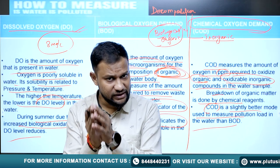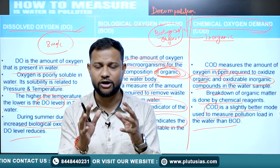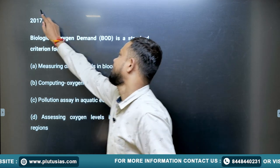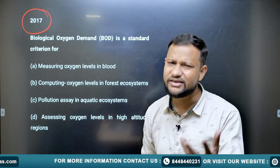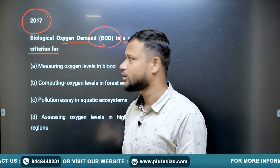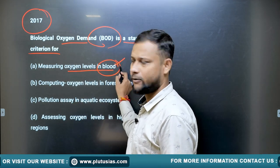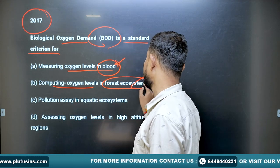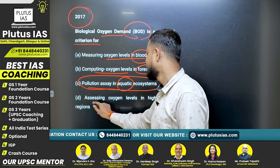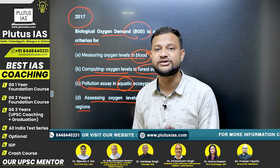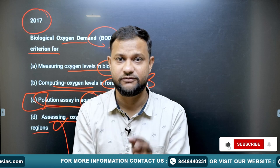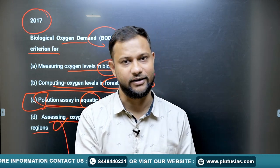I hope the three key differences — dissolved oxygen, biological oxygen demand, and chemical oxygen demand — are pretty much clear now. A question asked in the 2017 past year examination: 'BOD (biological oxygen demand) is a standard criteria for what?' Options were: measuring oxygen levels in blood; computing oxygen levels in the forest ecosystem; pollution in the aquatic ecosystem; assessing oxygen level in high altitude regions. The answer must be C — pollution in the aquatic ecosystem. I hope you guys are clear with DO, BOD, and COD. Thank you and have a good time.